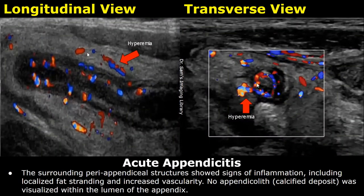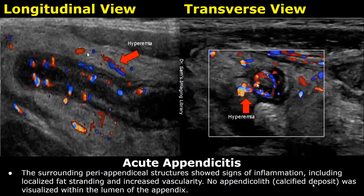After that, you can write about peri-appendiceal structures and mention localized fat stranding and increased vascularity. In this example, no appendicolith — that is, a calcified deposit — was visualized within the lumen of the appendix.